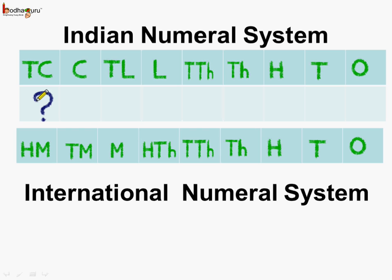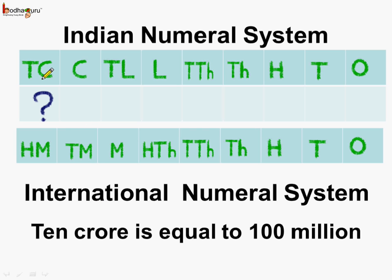The last place in our chart: in the Indian numeral system we have ten crores, and this place value is called hundred millions in the international numeral system. So ten crore is equal to hundred million. That was the correlation between the Indian numeral system and the international numeral system.